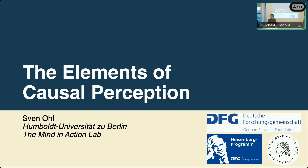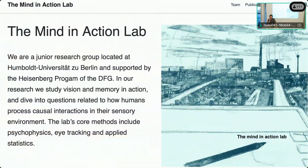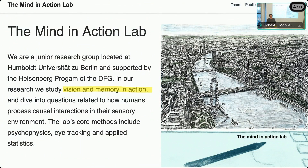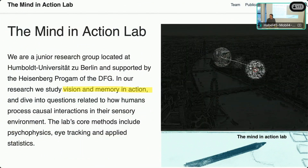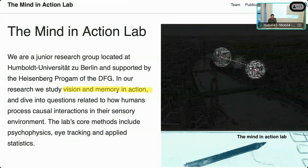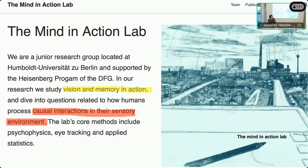Thank you for having me and thank you for this huge crowd. I started the Mind in Action Lab in April this year and we have two core research topics. First, we study active vision and active visual working memory — how we perceive and remember across eye movements. Second, we study how we detect causal relations in our environment and how this is implemented in the visual system. Today we present research from this second domain.